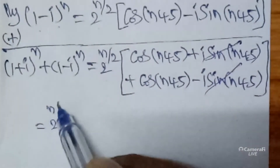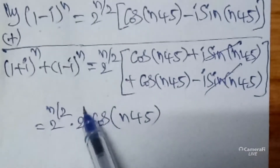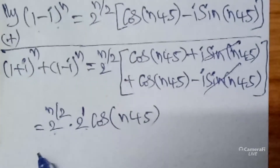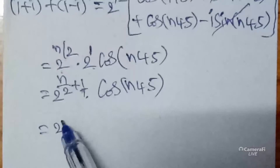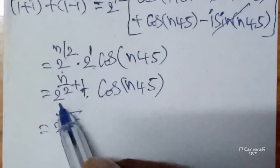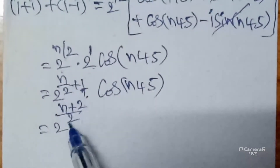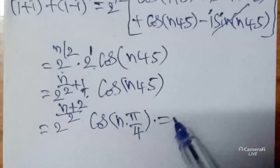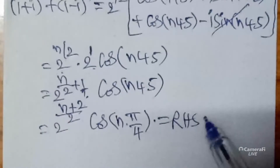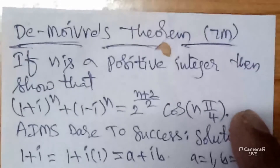The remainder is 2 power n by 2 into 2 cos n 45, since the two cosine terms add to give 2 cos n 45. This gives 2 power (n+2) by 2 into cos of n times 45. Writing 45 as pi by 4, the required answer is 2 power (n+2) by 2 into cos n pi by 4.